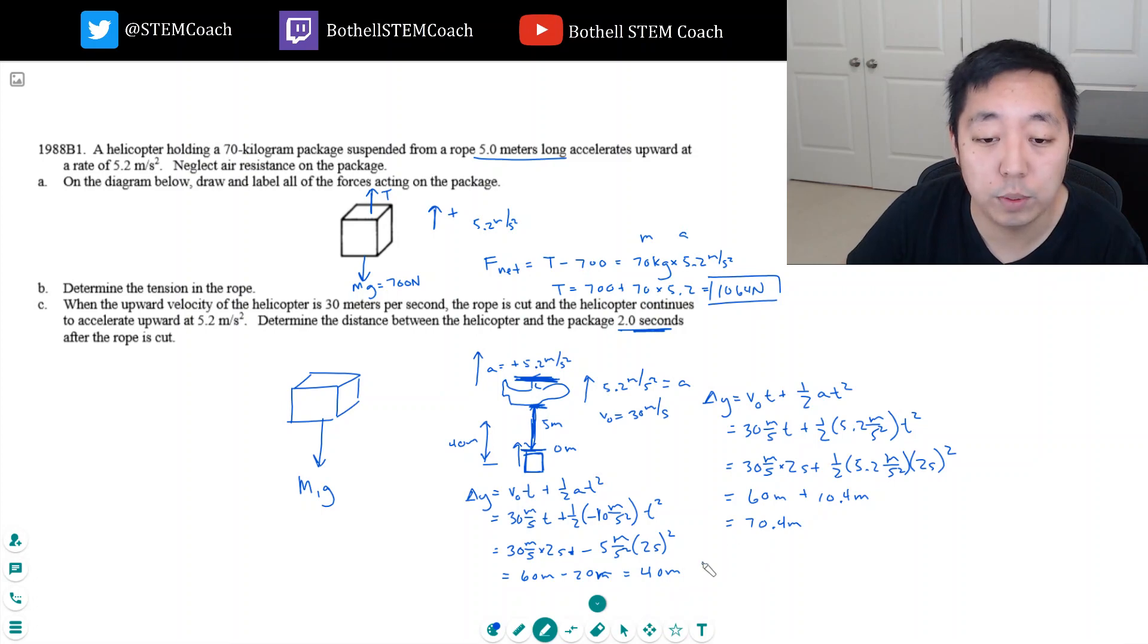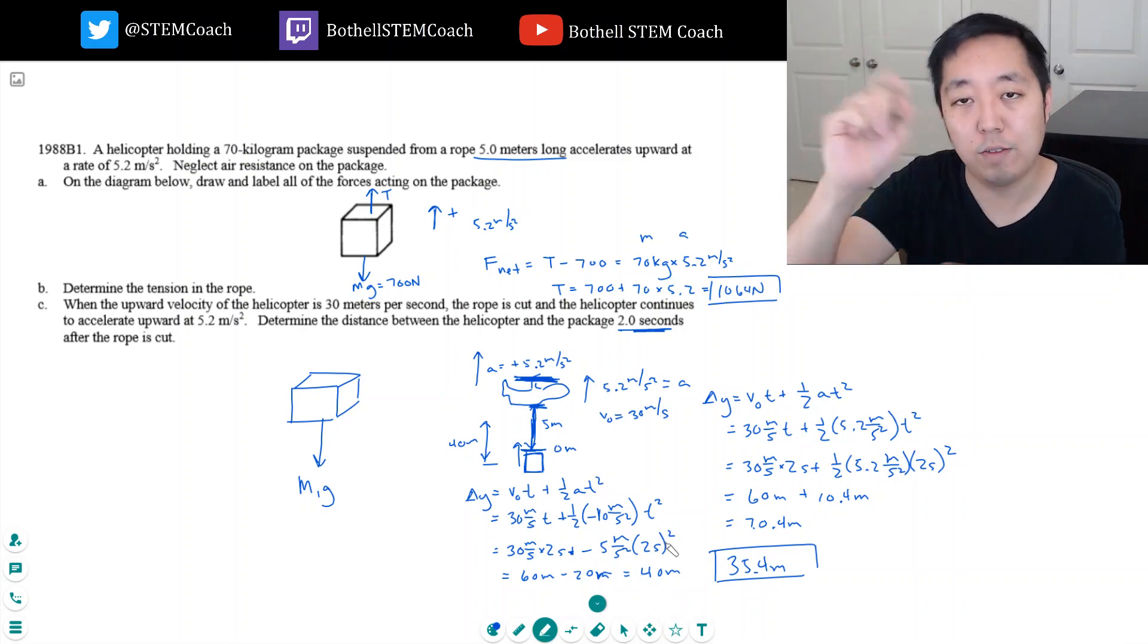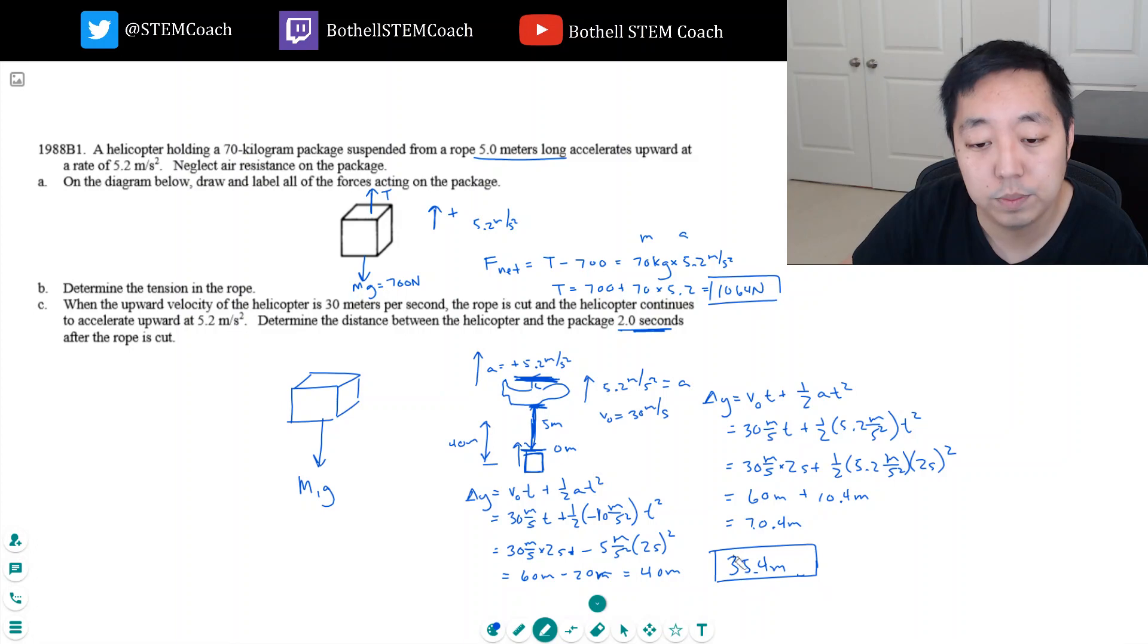So the distance between them. He moves up 70.4 meters, but I can't forget the fact that they started off five meters apart already. So the difference between them has gained 30.4 meters, right? That's the separation plus the initial five meters. So 30.4 plus five is 35.4 meters. That's my answer. He goes up 70 meters, the box only goes up 40 meters, but then they started off five meters apart, so they're 35.4 meters apart.